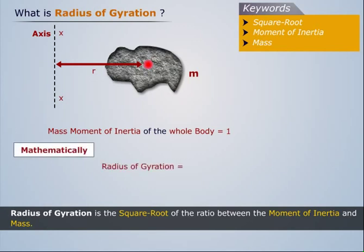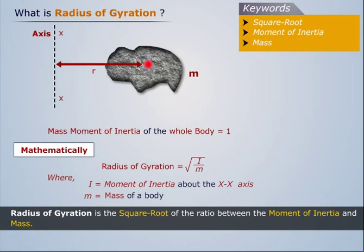Mathematically, radius of gyration is represented as r = √(I/m), where I is the moment of inertia about the XX axis and m is the mass of a body.